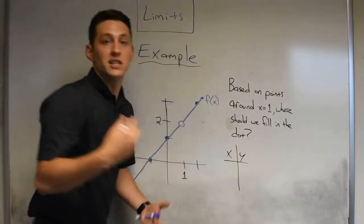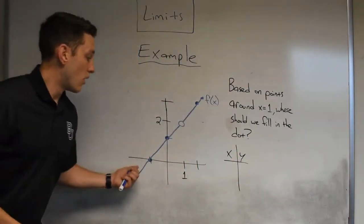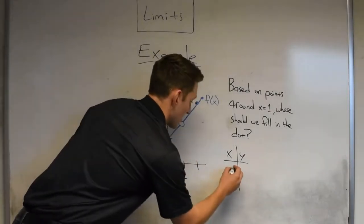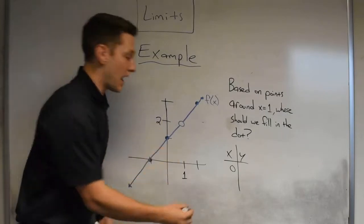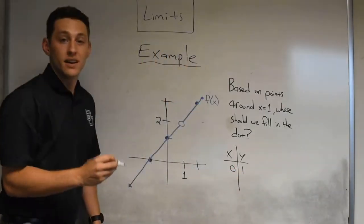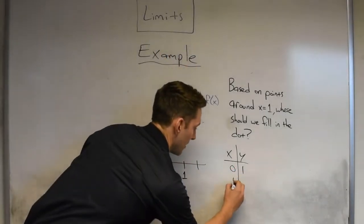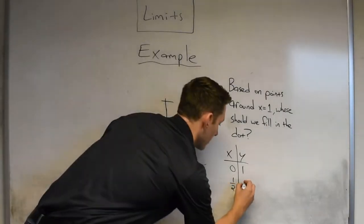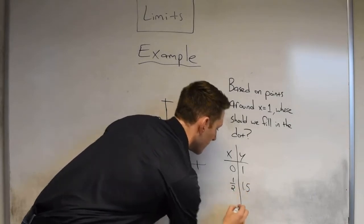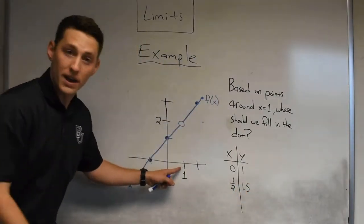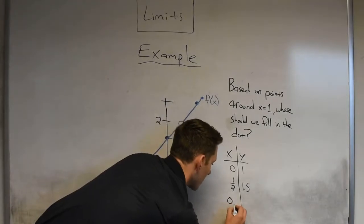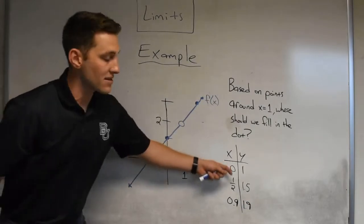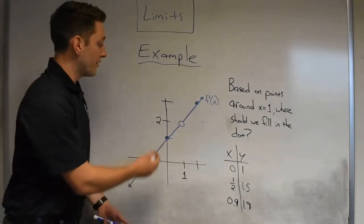To do this we can construct an xy chart. If we were to walk up from the left hand side of this function, maybe we can start at x equals 0 — we get a y value of 1. If we bumped it up even closer, maybe to one half, it looks like we get a y value of 1 and a half. Getting even closer, let's say 0.9, we get a y value of 1.9. As you can see, these numbers are trending toward a certain value of 2.